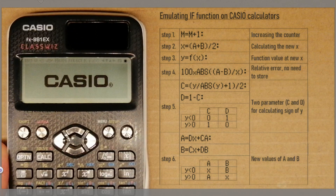The required steps are as follows. First, we need a counter m, which tracks how many iterations have finished. Second, we calculate the midpoint of the range and store it in variable x. Third, we calculate the value of the function at the midpoint and store it in variable y.